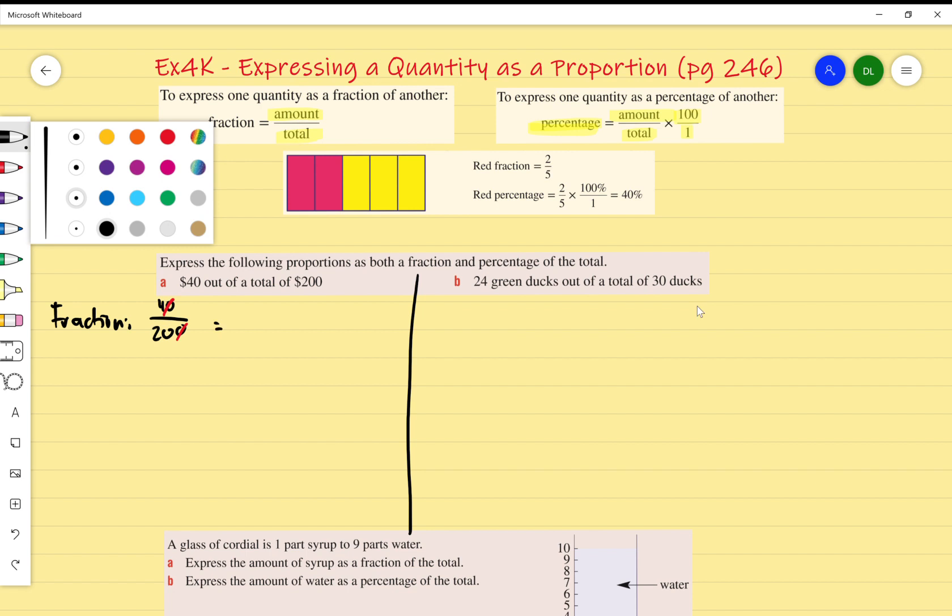I'm going to cross out the zeros and end up with 4 over 20. What number goes into both 4 and 20? 4. So divide both by 4 and I end up with—4 is 1, and 20 divided by 4 is 5. So my answer is 1 over 5.